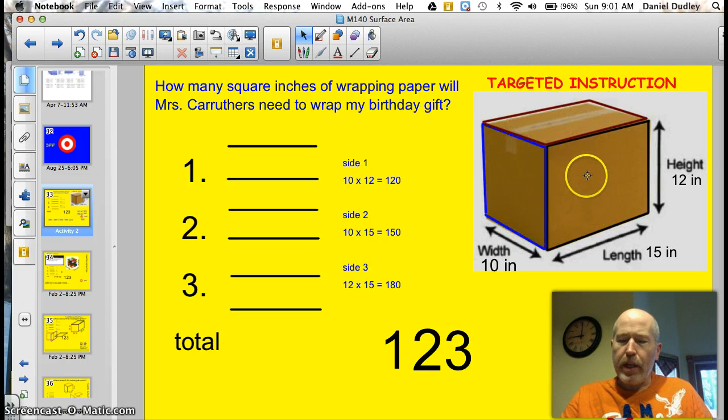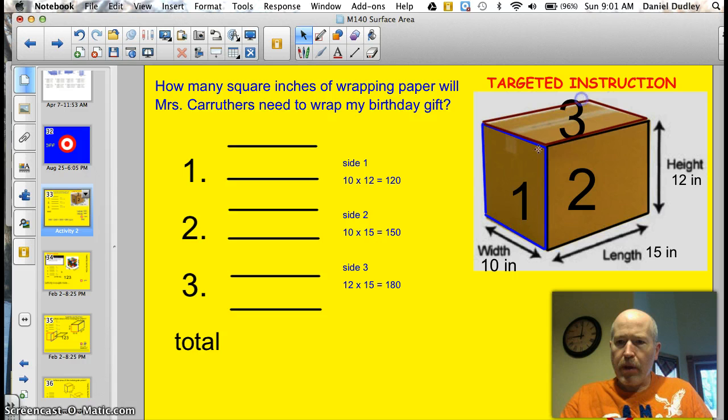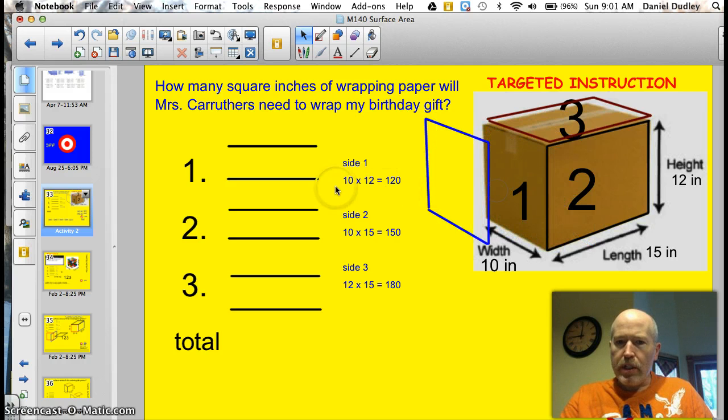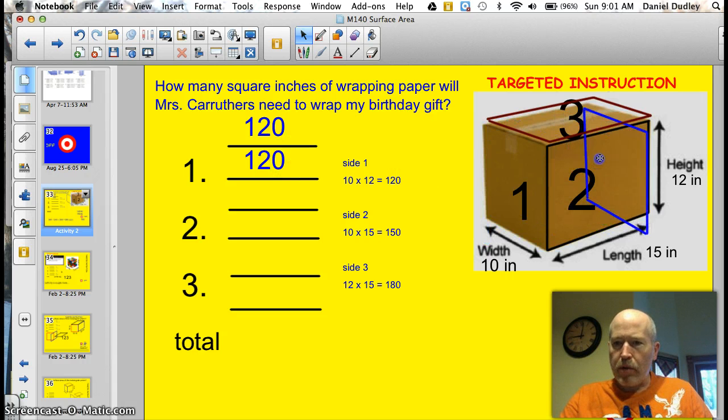Well once again it's as easy as one two three. On any box or prism the way they draw it you're going to be able to see three sides. So you just number the sides and do them. Here's side one, let's call this side two, and let's just call this one side three. So the dimensions for side one is 10 by 12. So 10 times 12 is 120. So that's going to be the answer for side one. And do you notice how I put two of them in? Because there's also a back side to every prism too.